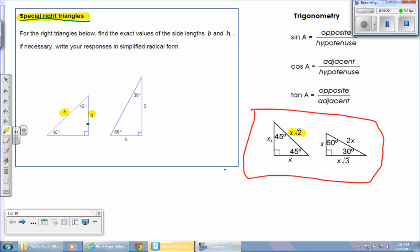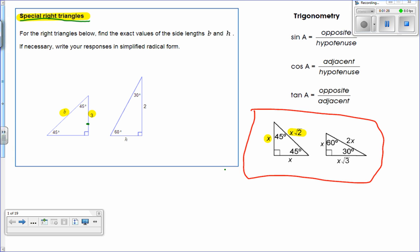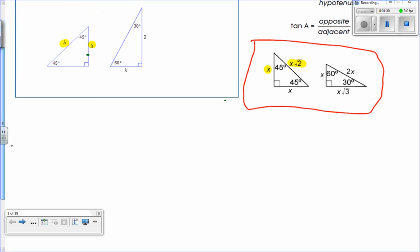We're going to call it x. Set it up like an algebraic equation and solve. That's always going to be your easiest route. If you're setting up like an algebraic equation, you're going to say, okay, b is equal to x√2.